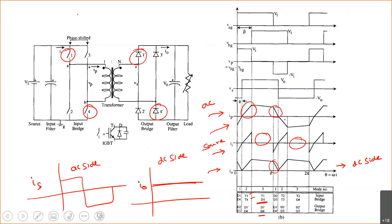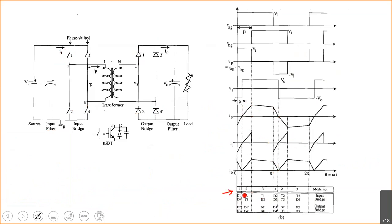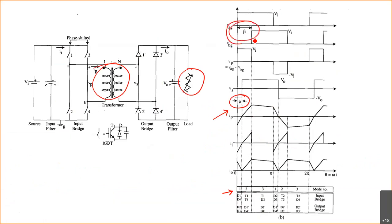These are the idealized waveforms, divided into three modes. The phase shift phi depends on the inductance L and the load, while the control phase shift beta is externally set. From 0 to phi we have Mode 1, from phi to beta we have Mode 2, and from beta to pi we have Mode 3.